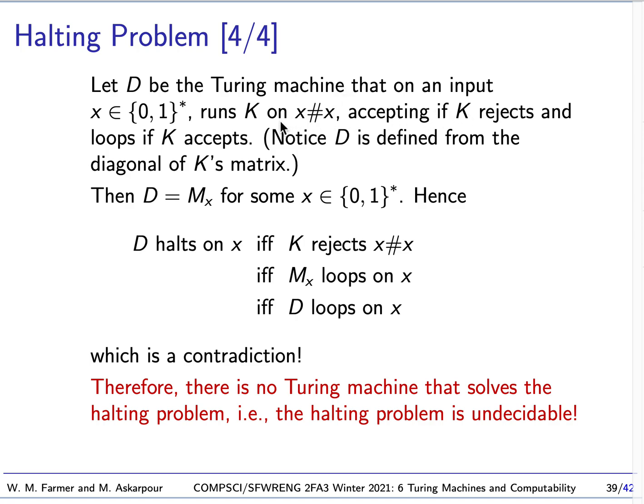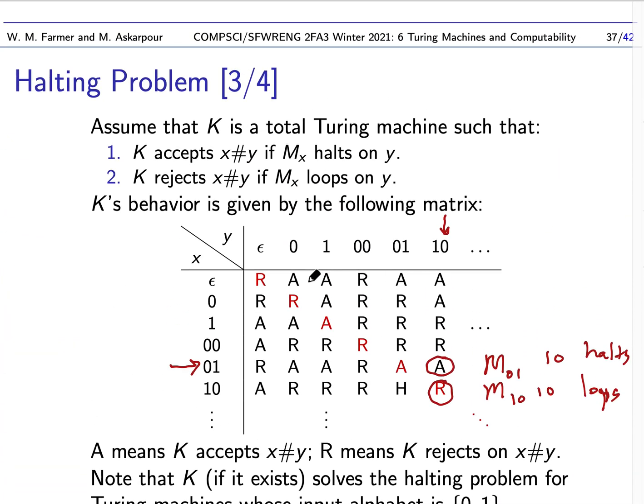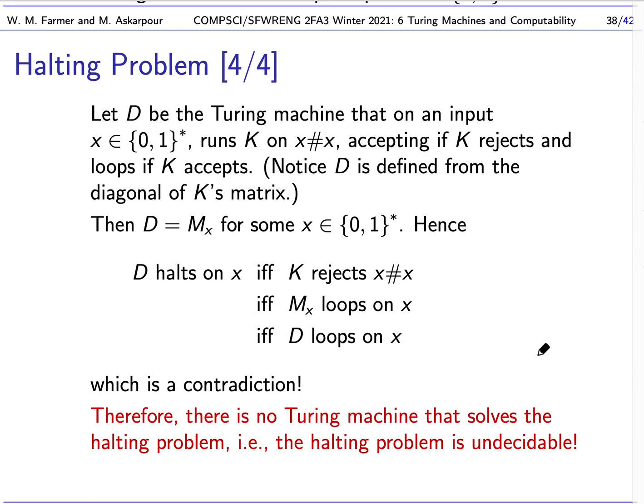Now K will either accept or reject. Our machine will accept if K rejects. And it will loop if K accepts. So this is pretty easy. If we have a Turing machine K, it's very easy to create this diagonalization machine. We basically can run K because we can simulate K just the way we would with a universal Turing machine. So we can create this Turing machine. And notice that the Turing machine is defined by the diagonal of K's matrix. Because what it does is, when we're running K on this, this diagonal point xx, if K rejects, D accepts. And if K loops, I should say, if K accepts, D loops.